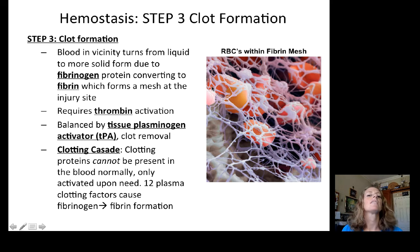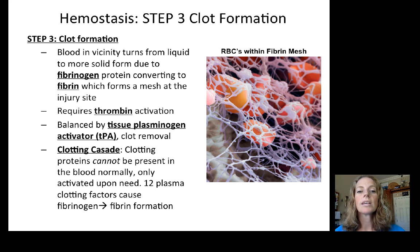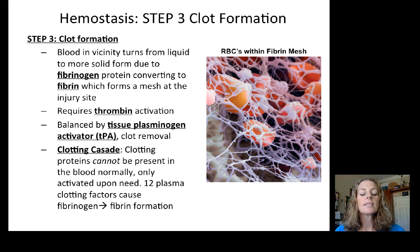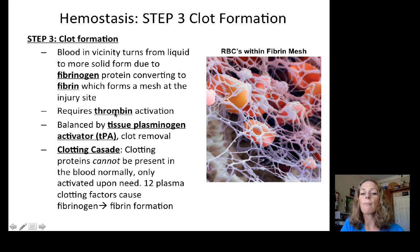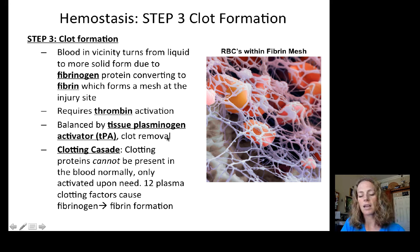The last step is clot formation, which is in addition to — not the same as — the platelet plug. The blood in the vicinity of the injury accumulates fibrinogen, which converts to fibrin and forms a mesh at the injury site. This requires activation of thrombin, and is balanced by tPA — tissue plasminogen activator — which can remove clots that form in undesirable places.